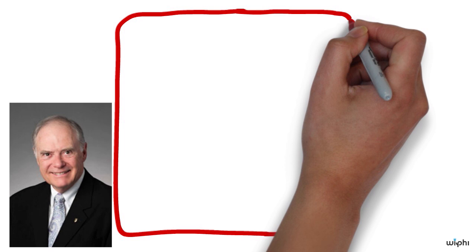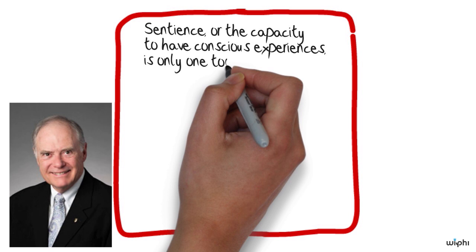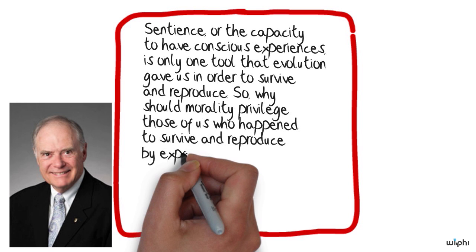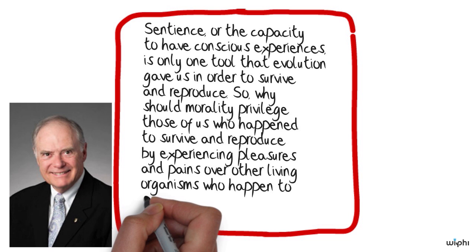As Kenneth Goodpaster puts the point, sentience, or the capacity to have conscious experiences, is only one tool that evolution gave us in order to survive and reproduce. So why should morality privilege those of us who happen to survive and reproduce by experiencing pleasures and pains over other living organisms who happen to survive and reproduce in other ways?